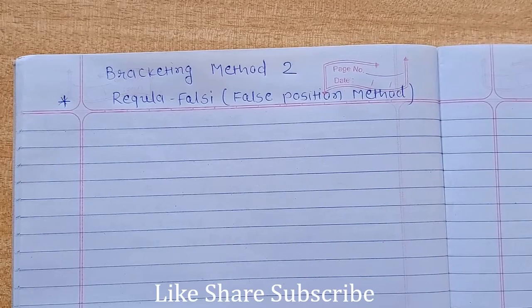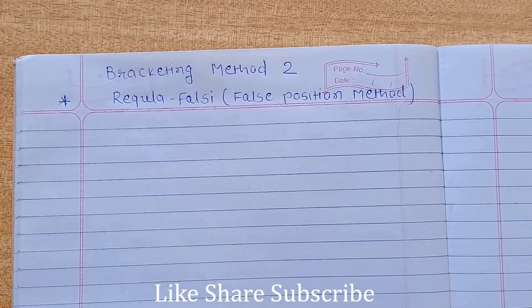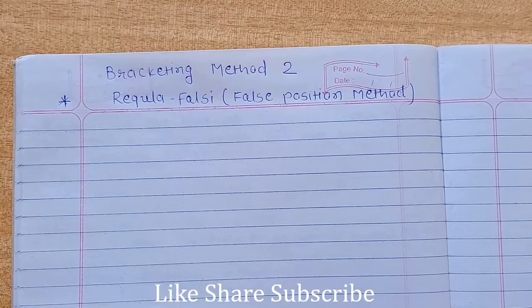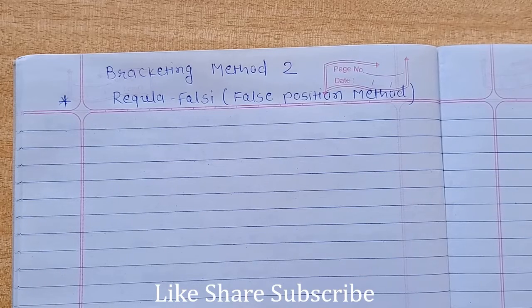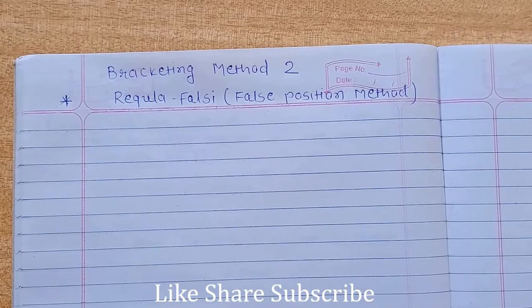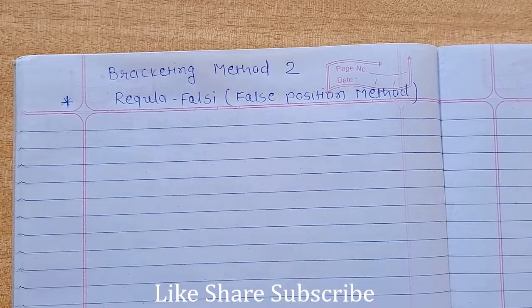Hello friends, welcome back to the channel. In the previous video we have learned one bracketing method, that is bisection method. In this video we will learn another bracketing method that is called false position method or also known as regula falsi method.